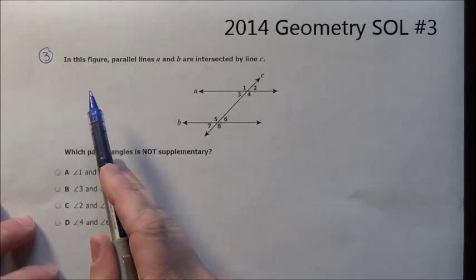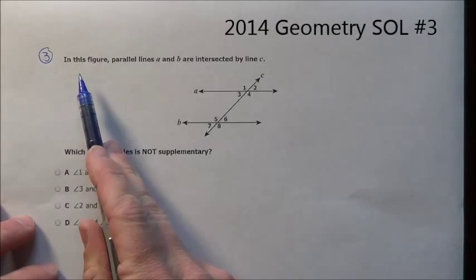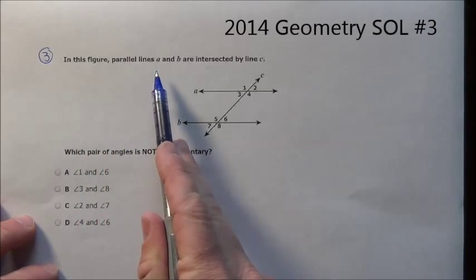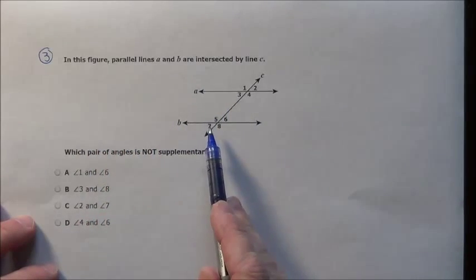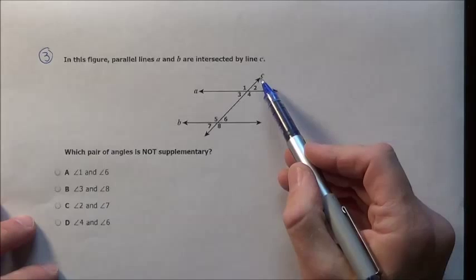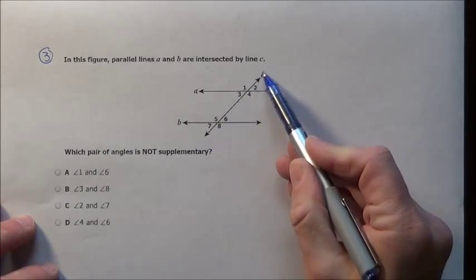Here's problem 3 from the 2014 SOL. In this figure, parallel lines A and B are intersected by transversal C.